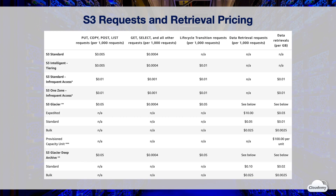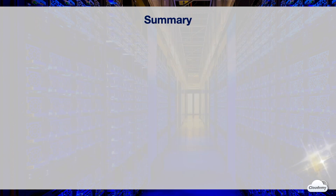S3 also charges different rates for API requests and data retrievals across storage classes. S3 Standard and Intelligent Tiering have the lowest request rates, charging 0.5 cents per thousand PUT or LIST requests and 0.04 cents per thousand GET requests, with no charge for data retrievals. Standard IA and One Zone IA charge 1 cent per thousand PUT or LIST requests, 0.1 cents per thousand GET requests, and 1 cent per gigabyte for data retrievals. S3 Glacier and Glacier Deep Archive have the highest request rates, with different rates for standard and bulk retrievals. For S3 Glacier, you can optionally pay a higher rate for expedited data retrievals.